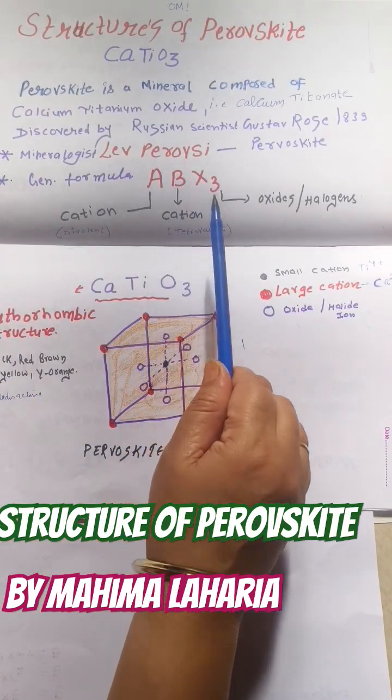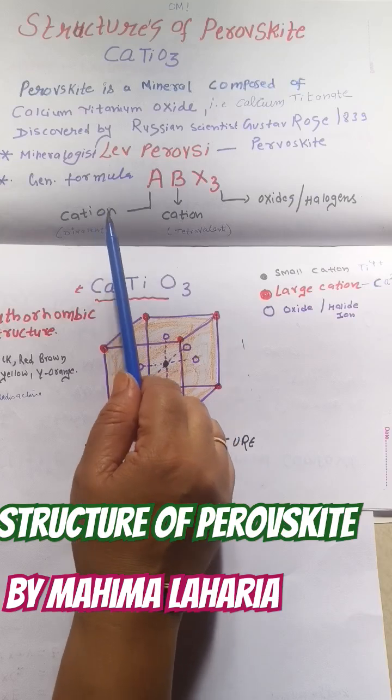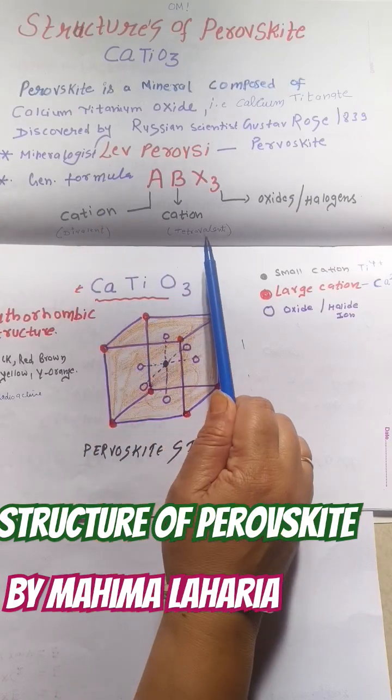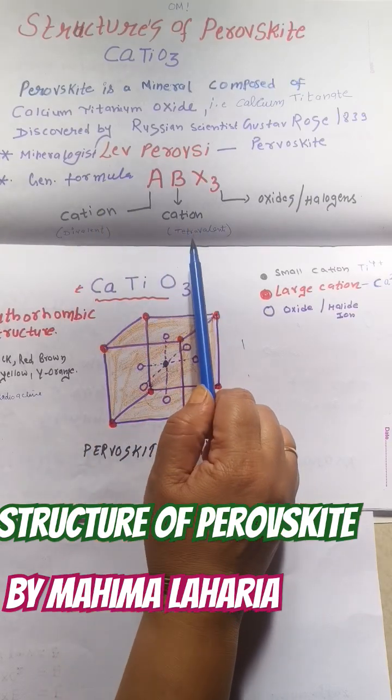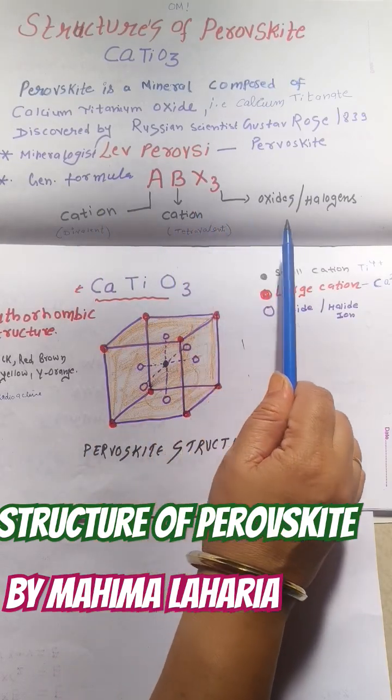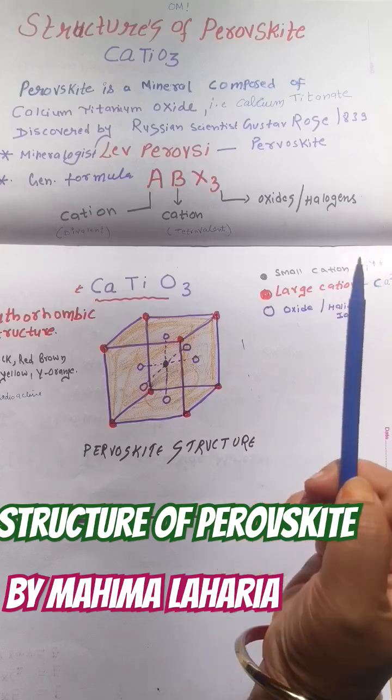The general formula is ABX3. A is any divalent cation, B is a tetravalent cation, and X3 represents the oxide or the halogen.